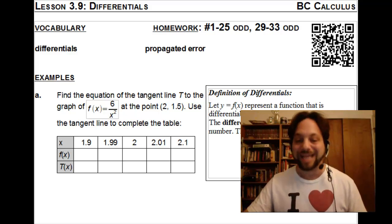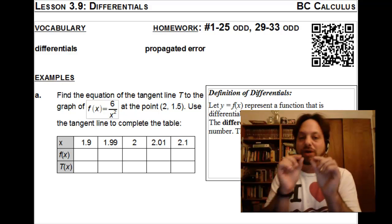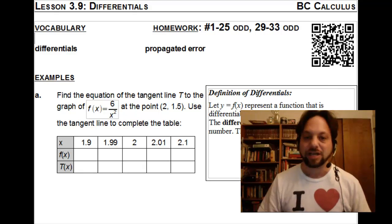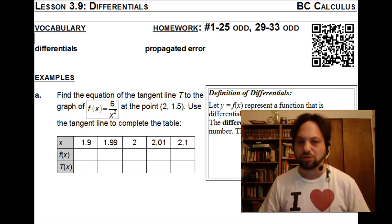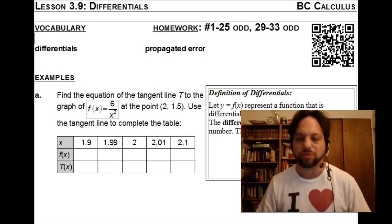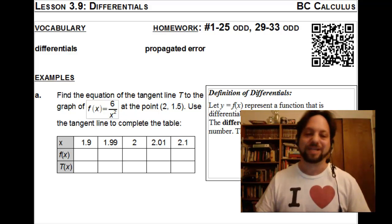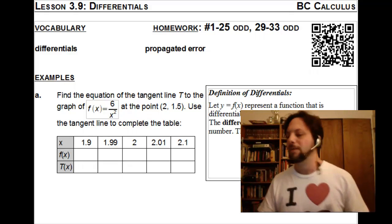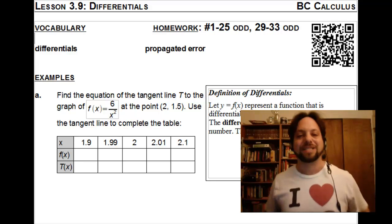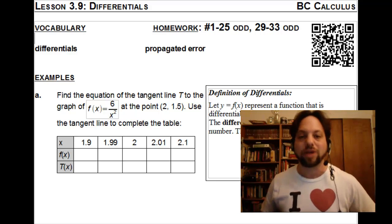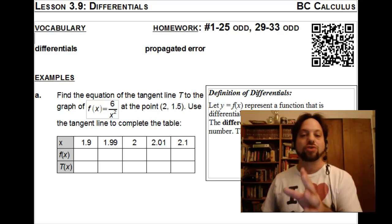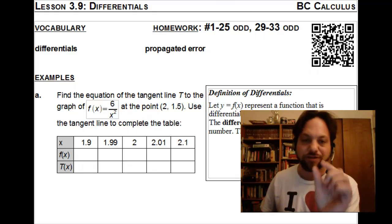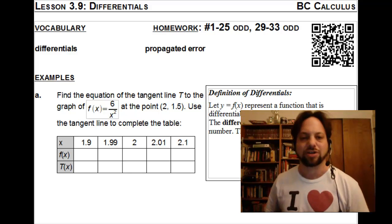Furthermore, we're going to take a look at propagated error — how a little difference at the beginning can end up being a huge difference at the end. We'll look at a couple of examples, including one of shooting a laser beam at the moon, and then an even more exciting example of a cube. Before we get into differentials, let's take a look at one quick example where we'll use a tangent line to approximate a small difference of values in a graph.